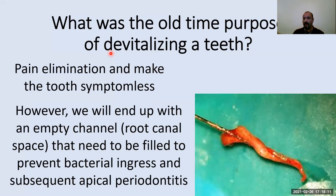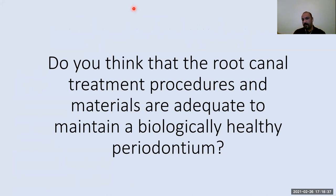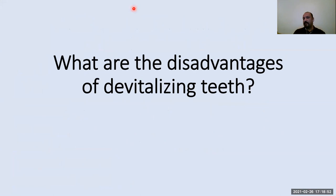However, we end up with an empty tube — the root canal space — which needs to be filled to prevent bacterial ingress and subsequent apical periodontitis. In order to prevent or heal apical periodontitis, we need to fill these empty channels. The question is: do you think that root canal treatment procedures and materials are adequate to maintain a biologically healthy periapical tissue? What are the disadvantages of devitalizing teeth?